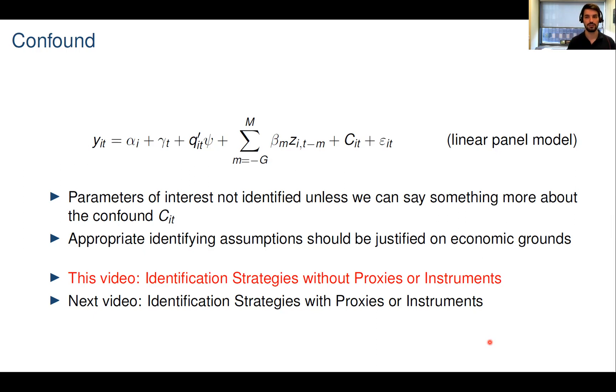Note that these assumptions or restrictions on the confound are generally going to be untestable and should therefore be justified based on economic grounds. In general, two classes of identification strategies are available here. Today I'm going to think about restrictions that impose sufficient structure on the confound so that the parameters beta can be identified without the use of proxies or instruments. If you do have access to proxies or instruments, alternative identification strategies become available, which we will discuss in the next video.